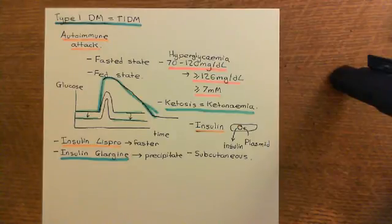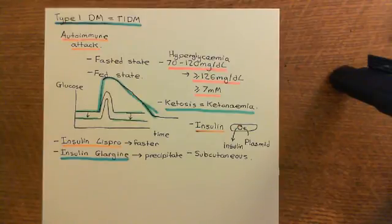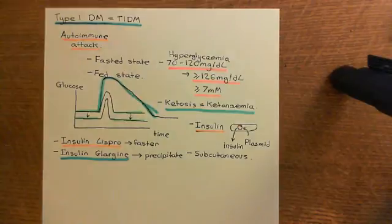So there are two different types of insulin used to treat the two different parts of type 1 DM: insulin lispro treats the problem of postprandial glucose spikes being too large in both height and broadness, and insulin glargine treats the problem of fasting blood glucose being too high because the tonic insulin signal in the fasted state has been lost. In the next video, we'll move on to the etiology of type 2 diabetes mellitus and also look at a monogenic form of diabetes.